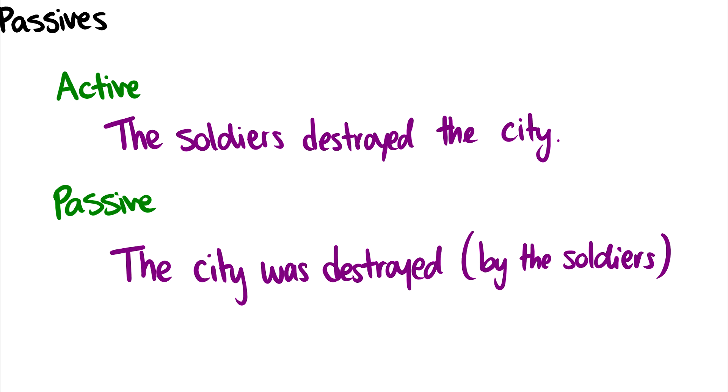In this case, we have an agent and a theme in the active sentence, but in the passive sentence, we really just have a theme and the agent by the soldiers is optional. So we don't really need this phrase in order for the sentence to be okay, but in the active phrase, we can't just say destroyed the city as a sentence or the soldiers destroyed as a sentence.